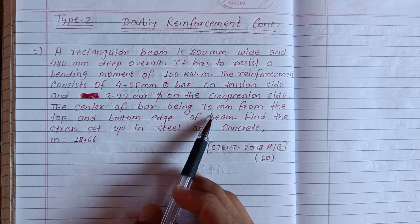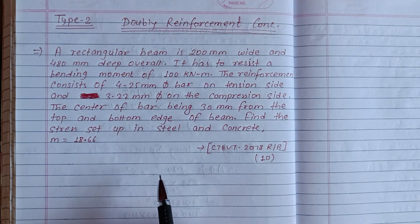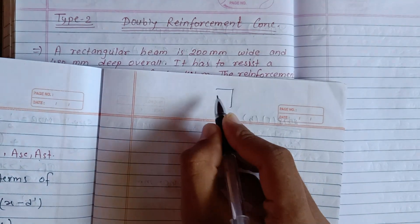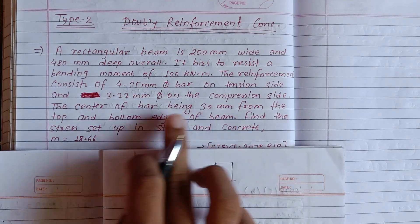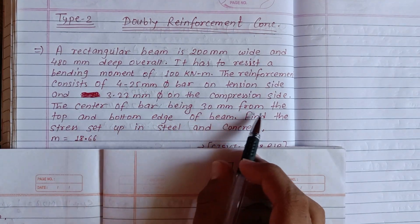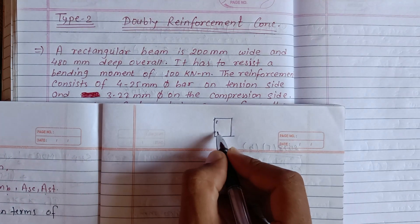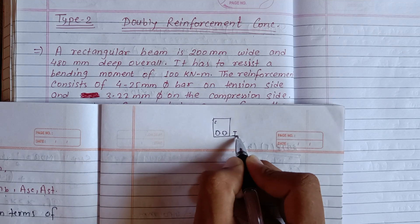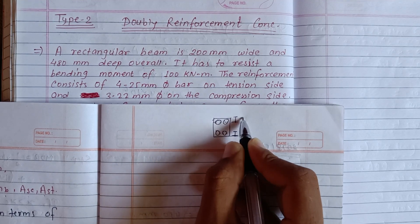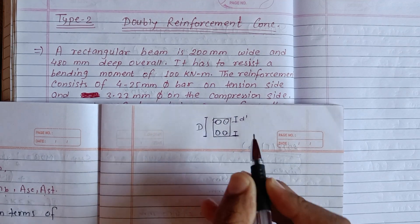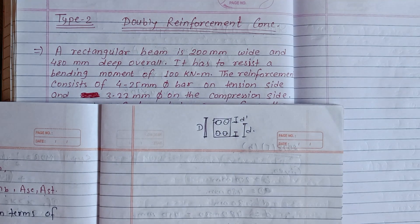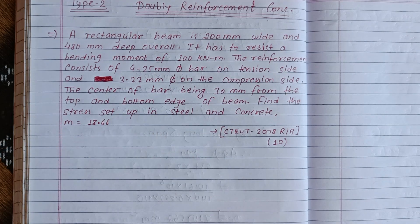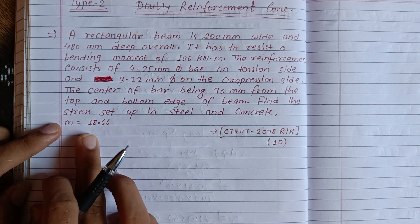The center of the bar is 30 mm from the top. The top is the center of the bar at the top, and at the bottom of the S-beam. This is the center. Now the bottom is also considered at the top. We need to find the stresses in the steel and concrete — specifically sigma CBC and sigma ST — using the M value, where M equals 280 upon the formula.